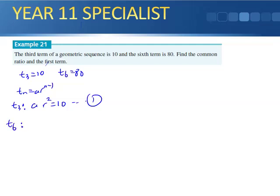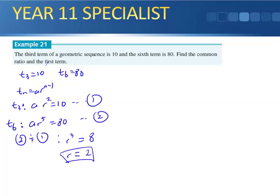And now if I do T of 6, I'm going to get AR to the 5, 6 minus 1 gives me 5, and that's going to equal 80. So I've got equation 2, and I'm going to do equation number 2 divided by equation number 1, so when I divide, the A's will cancel. So R to the power of 5 divided by R squared gives me R cubed, 80 divided by 10 gives me 8, so R will equal 2.